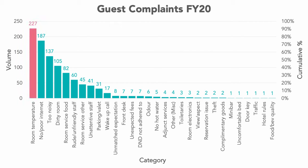Starting with the biggest bar on the left — room temperature — 227 complaints is 23% of the total. Remember, we had 1,000 complaints total; I've rounded to the nearest percent, so 22.7% becomes 23%. If we plot a dot on that bar at the height corresponding to 23% on the right-hand axis, here's where it lands. Moving to the next complaint — no or poor internet — we plot the cumulative percentage. Together, 227 plus 187 is 414, or 41.4%, rounded down to 41%.